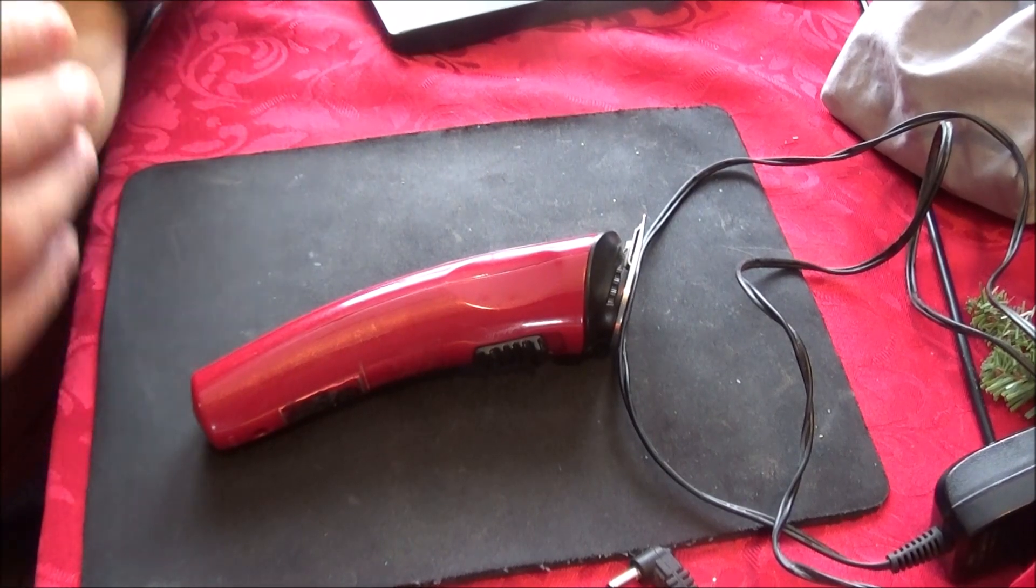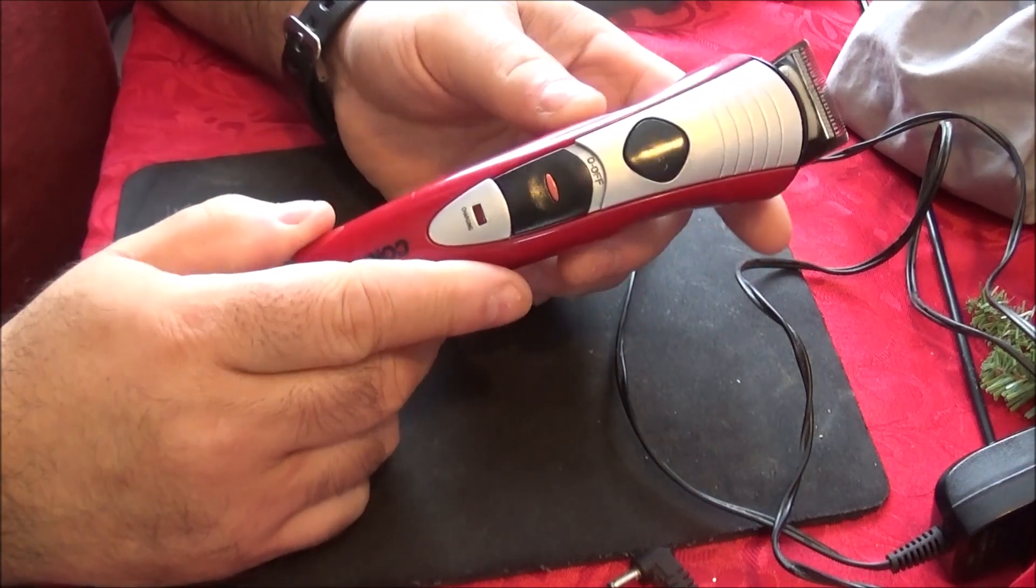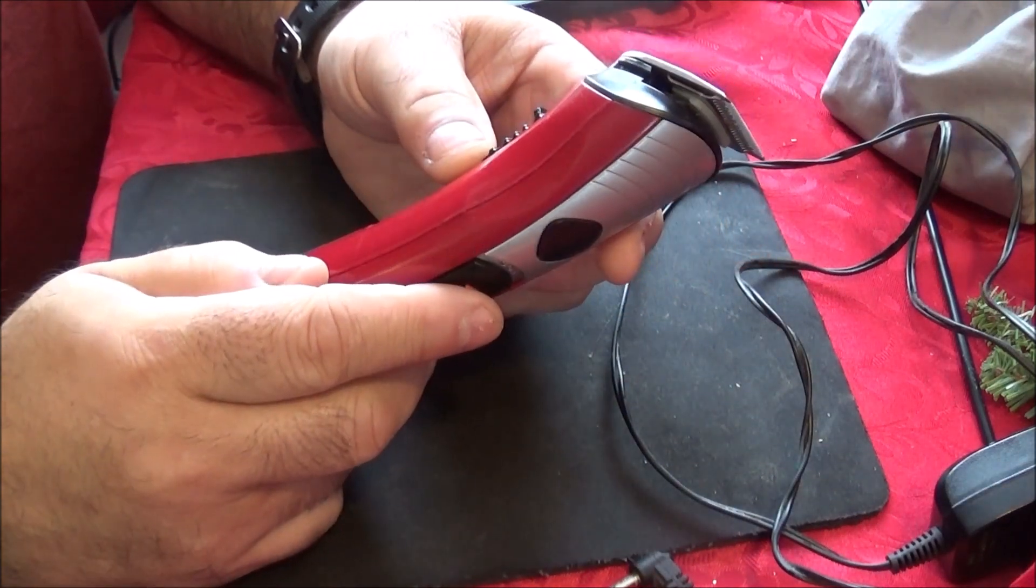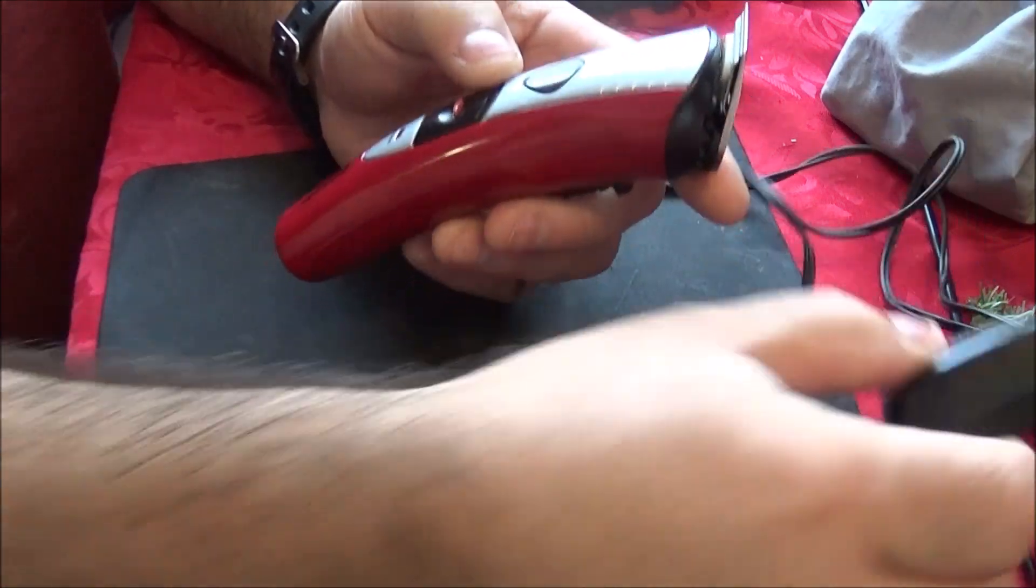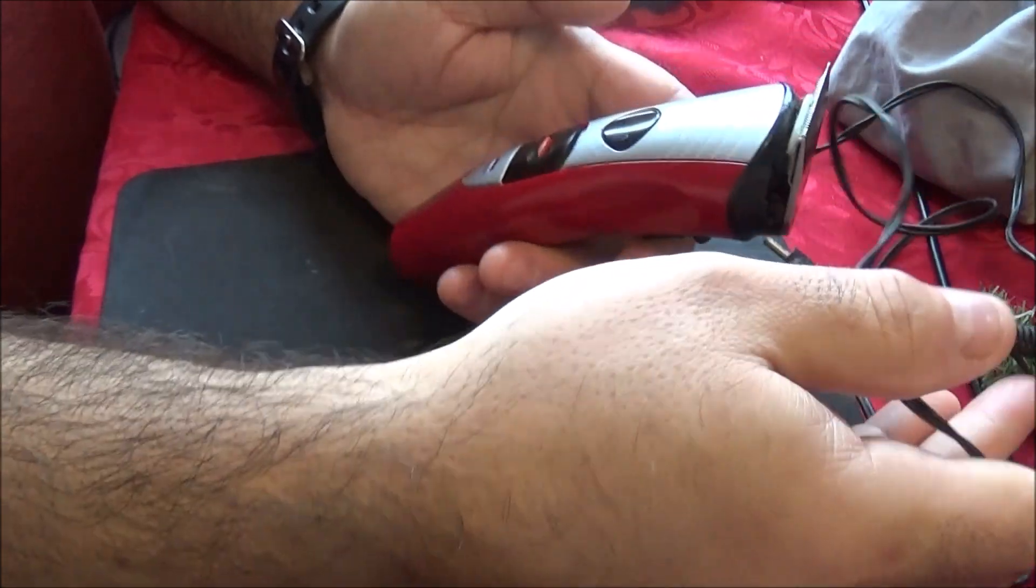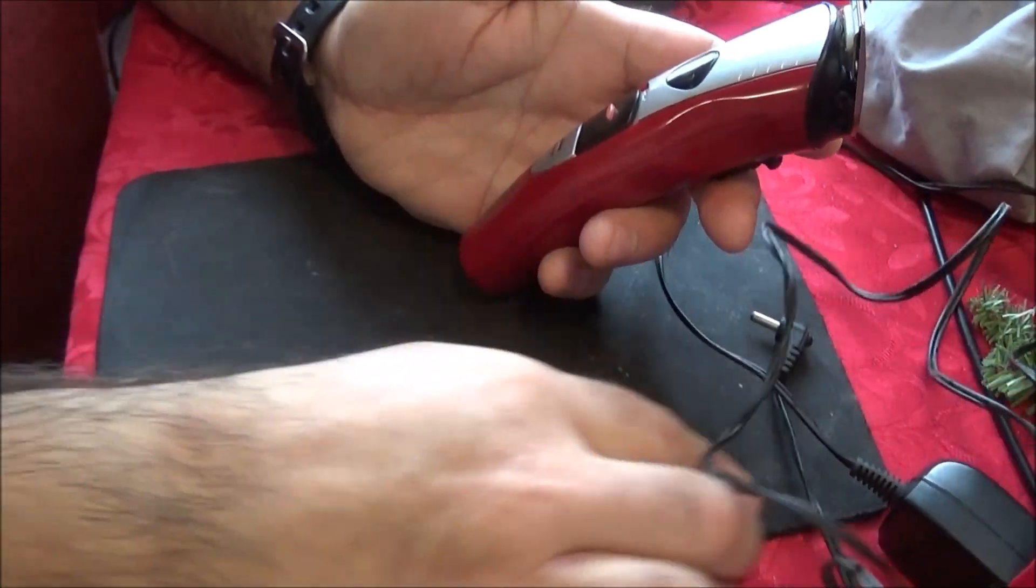Hello everyone and welcome back. I'm looking at a Conair cordless clipper here today. It's a bit older and it's not working. The power supply is 5.6 volts and basically it's not taking a charge at all now.